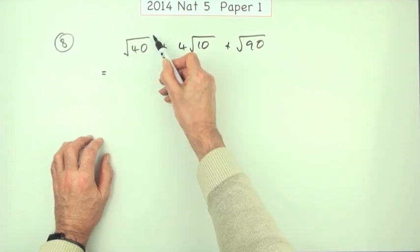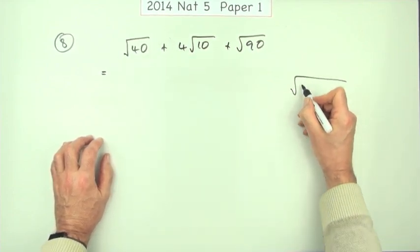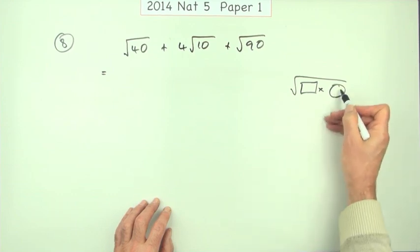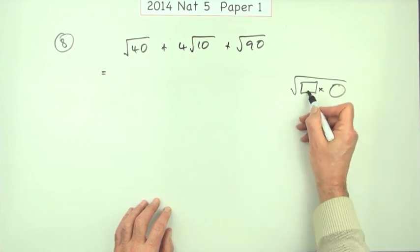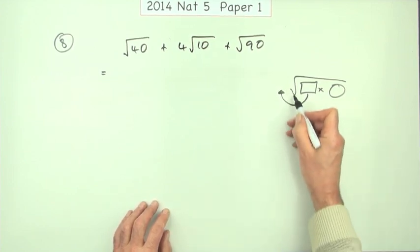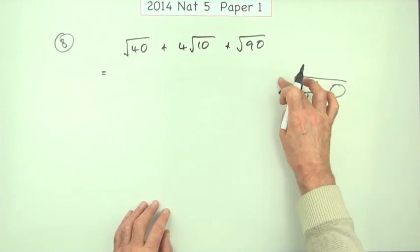Because when you simplify a surd, you have to break it into two parts—the product of two numbers where one's a square number and the other one can just be anything. Because it's only the square that can escape outside of the square root, because the square root of a perfect square is a whole number.